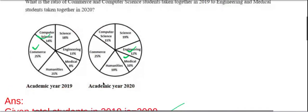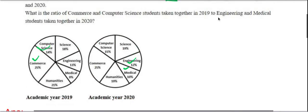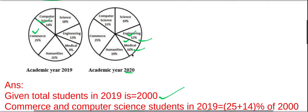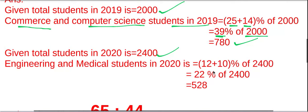The total number of students in 2020 is 2400. Engineering and medical students in 2020 are 12% and 10% respectively. So 12 plus 10 equals 22%. Therefore, 22% of 2400 equals 528.